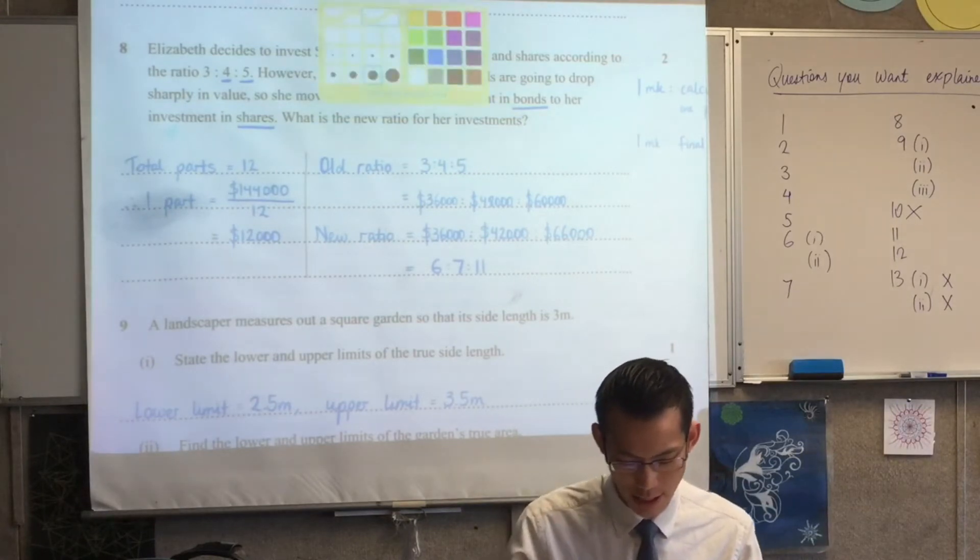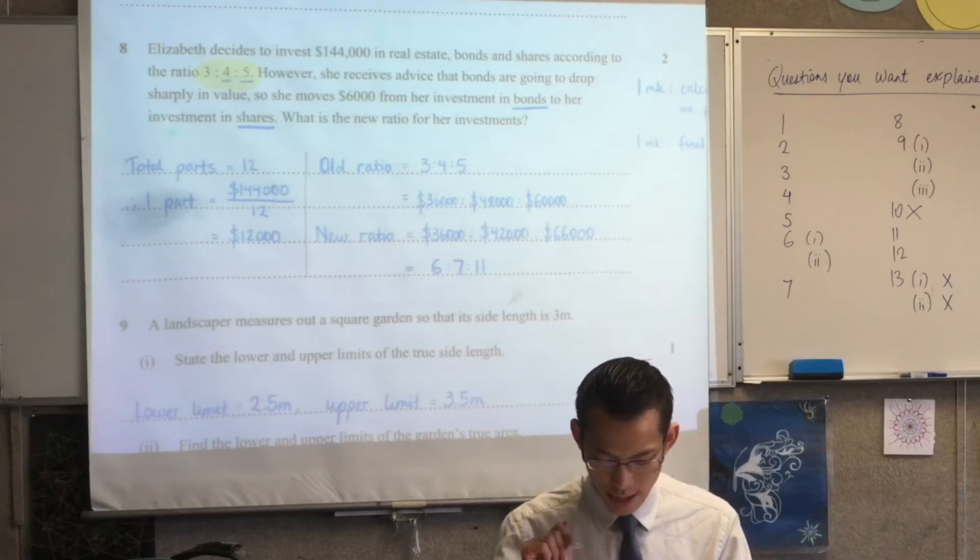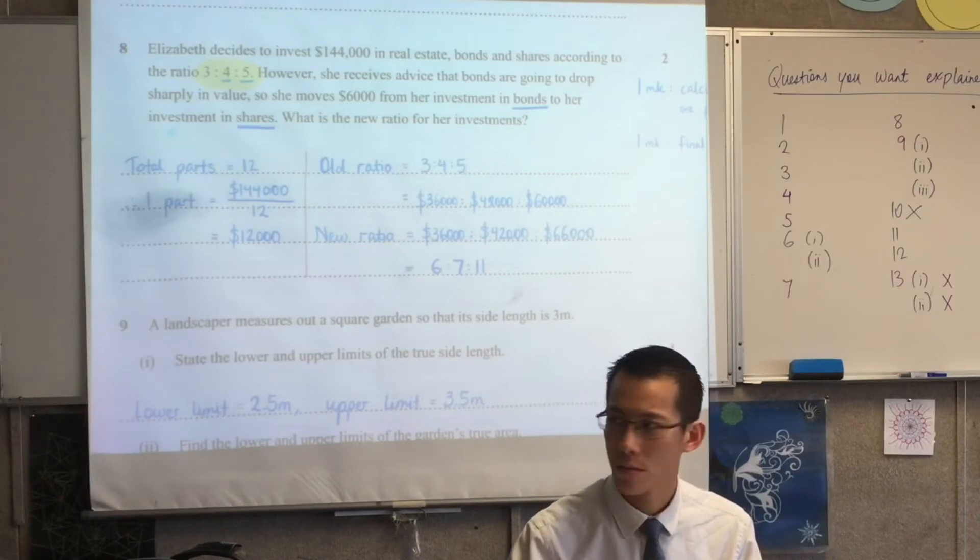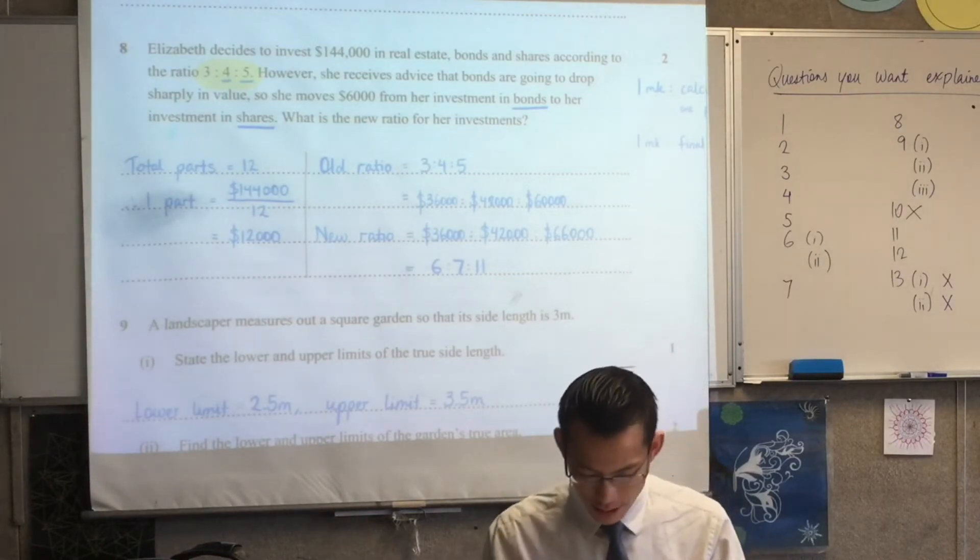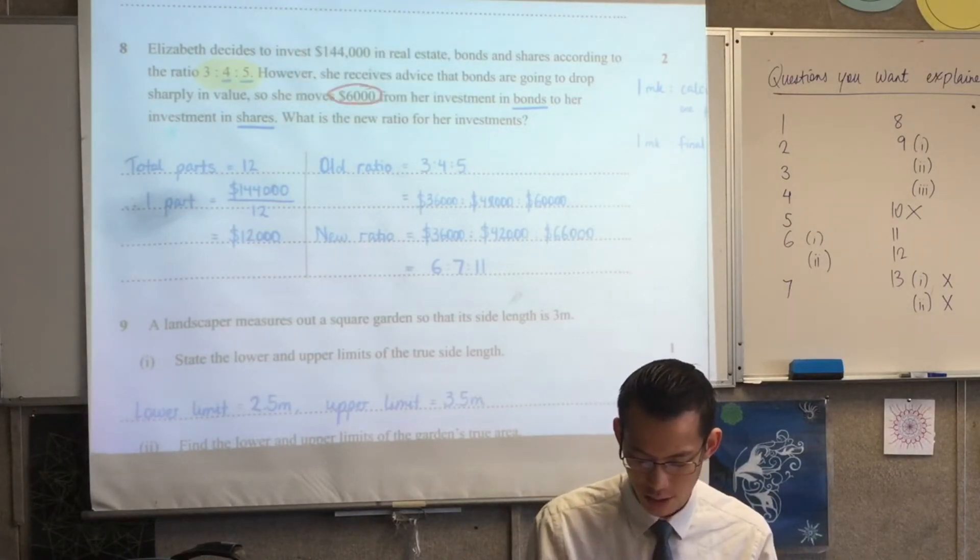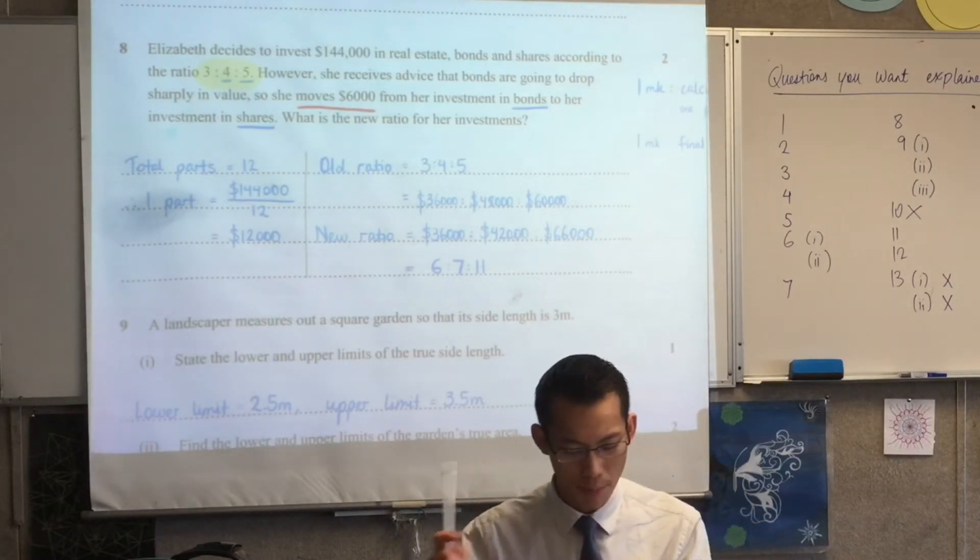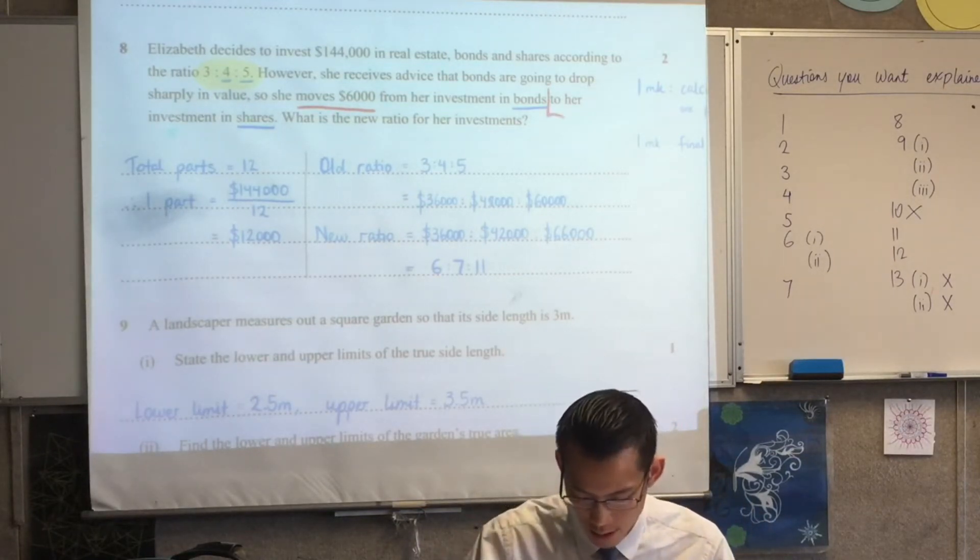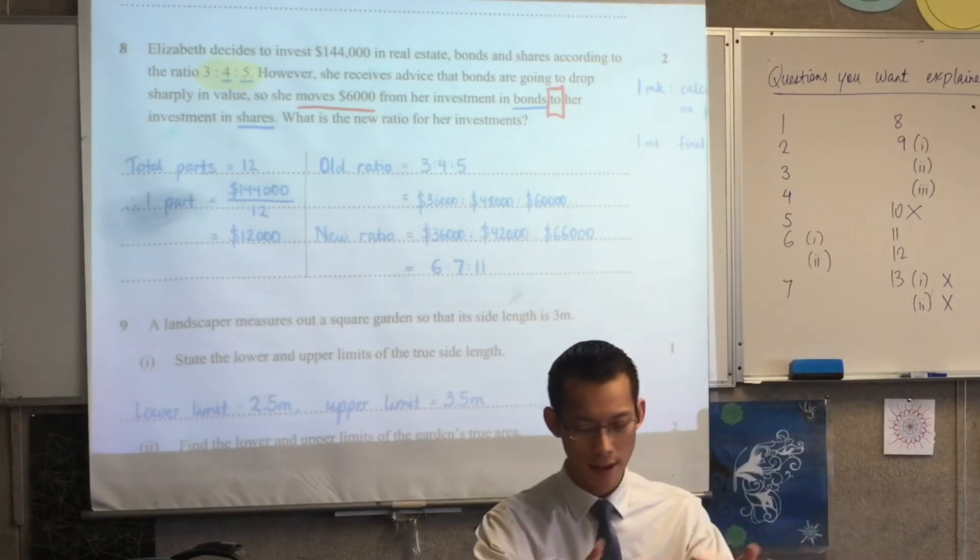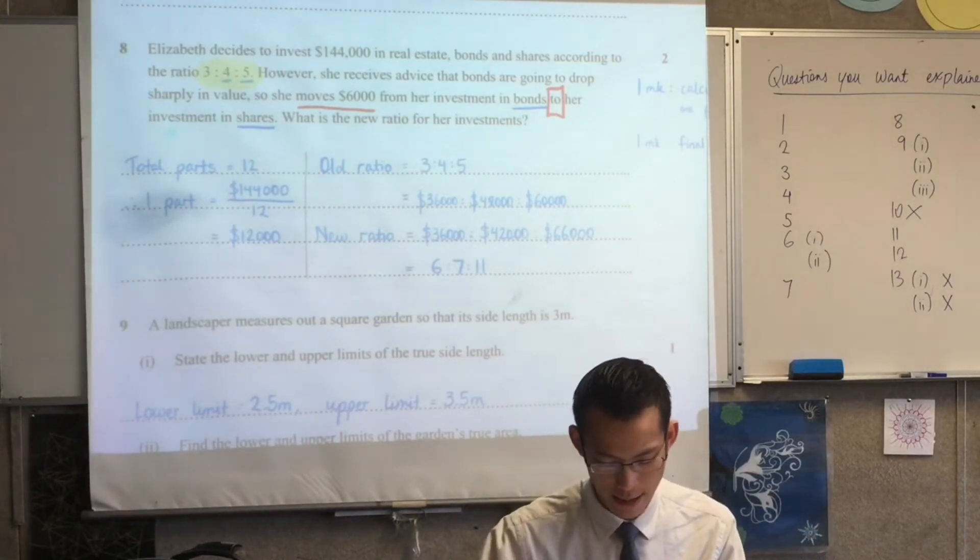So the first thing obviously is to understand, okay, this ratio, that's really going to matter to me. You can see I've underlined the four and the five. What do you think that's about? Why have I particularly done those two? Very good. You can see, in fact, we did a question like this a while ago. She moves $6,000. What's changing is bonds to shares, right? So you can see which direction the money is going in and the ratios that are affected are the four and the five. That's why I've highlighted them in particular.